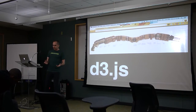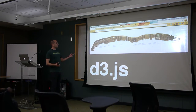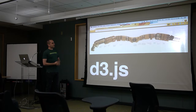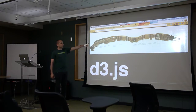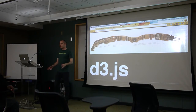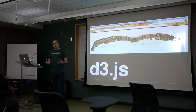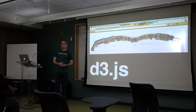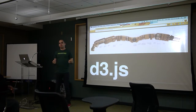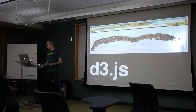So, D3. The way I think about D3 is as a utility belt — here's a nice picture of Batman's utility belt. It is not a charting library, it is not a graphing library, it's not even a graphics library. It's really a collection of really well thought out functions that help you tie together many different technologies. And yeah, it comes in handy all the time.